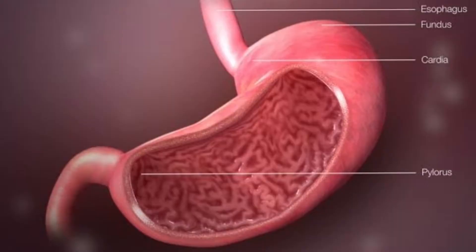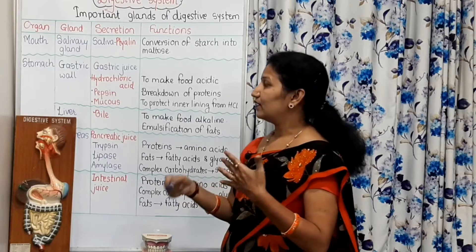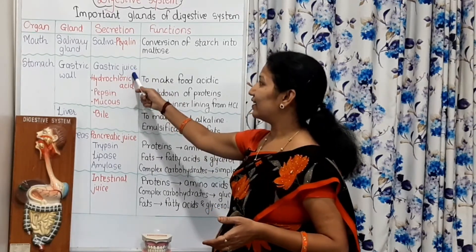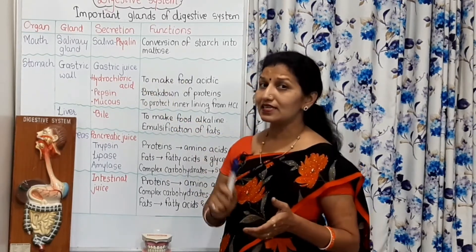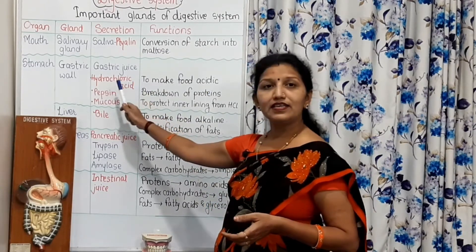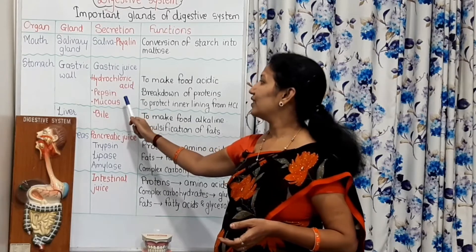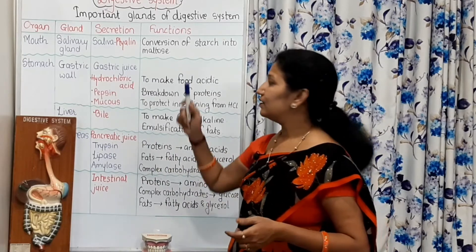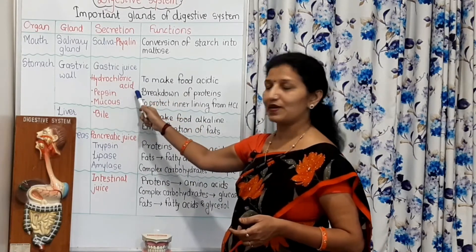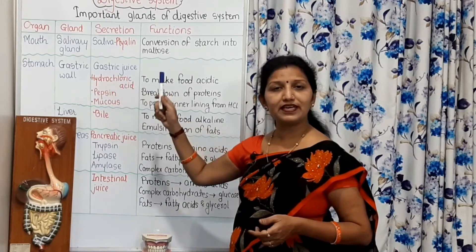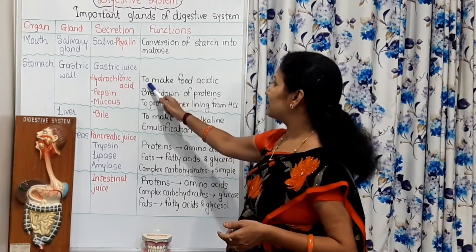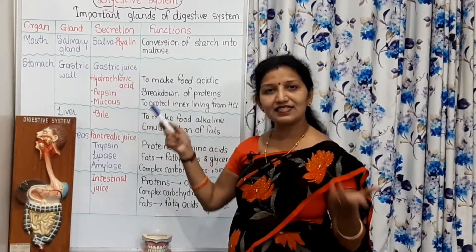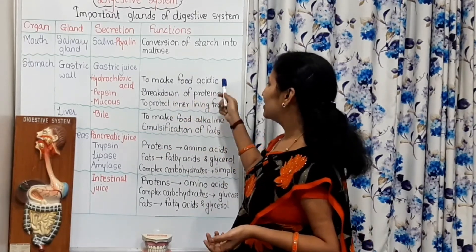Then, stomach. In the stomach, in the gastric walls, there are gastric glands and they secrete gastric juice. This gastric juice contains three things: dilute hydrochloric acid, pepsin, and mucus. The function of dilute hydrochloric acid is to make the food acidic, as it is an acid.